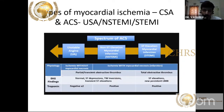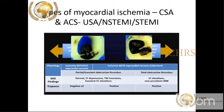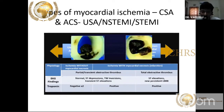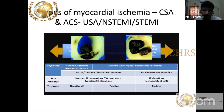Acute coronary syndrome can be divided into non-ST elevation ACS and ST elevation ACS. ST elevation ACS is due to complete occlusion, producing ST elevation or newly onset persistent LBBB. Non-ST elevation ACS is usually due to partial sub-occlusion, resulting in ST segment depression and T-wave inversion. Sometimes ST elevation can occur in non-ST elevation ACS, but it is usually very transient.